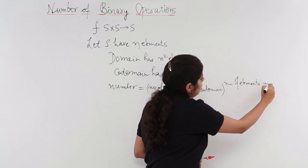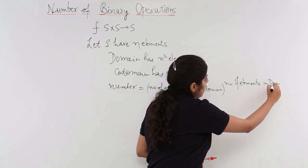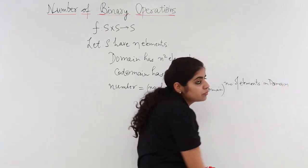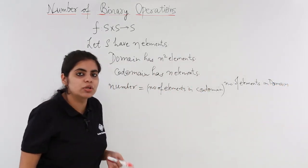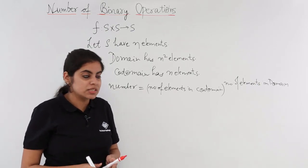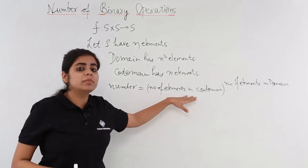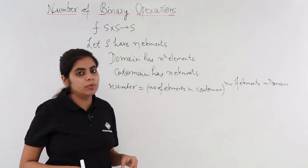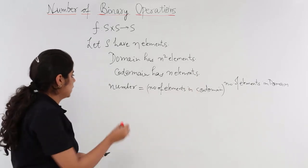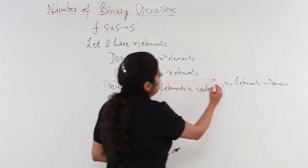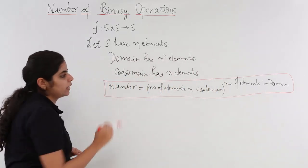Remember this was a formula we derived also. If you are not aware of this formula, you may watch the previous videos regarding number of functions. Now the formula is number of elements in codomain to the number of elements in domain. Codomain power domain. You can remember it that way.